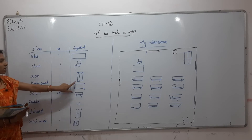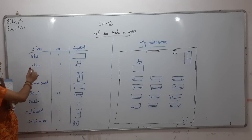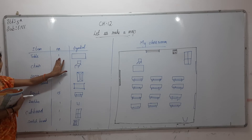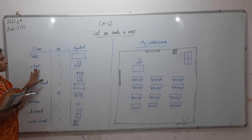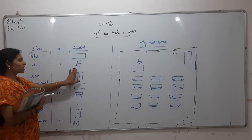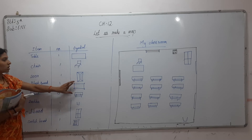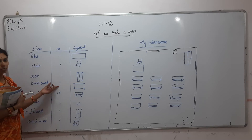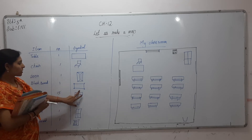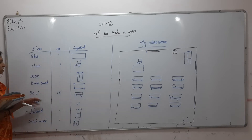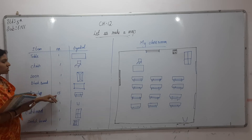For the door I used this symbol, for the blackboard I used this symbol. For the table I drew a rectangle. For the chair I drew a chair-like symbol. One door is there and I have drawn this type of symbol. One blackboard is there and this is how I have drawn my blackboard.